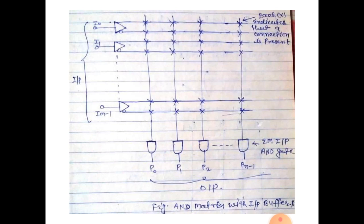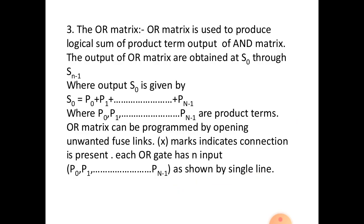Now this AND gate outputs as an input in OR gates and OR gate output is sum. For the OR matrix: OR matrix use to produce logical sum of product term output of AND matrix. The output of the OR matrix are obtained S0 through S n minus 1. Where output S0 is given by S0 equals P0 product term plus P1 product term plus dot dot Pn minus 1 product terms.